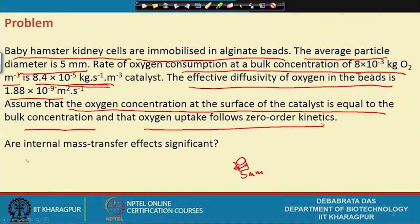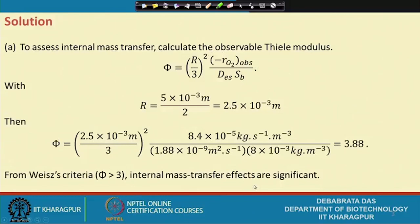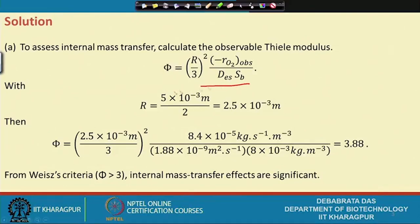We need to find out whether the internal mass transfer effect is significant. This is purely a mass transfer problem in a heterogeneous system. To assess internal mass transfer, we use the observable Thiele modulus — an equation we have already seen.